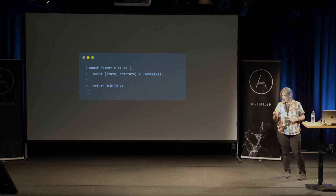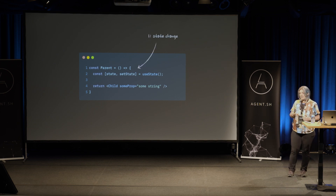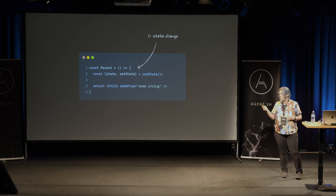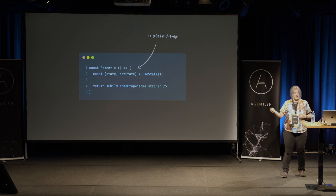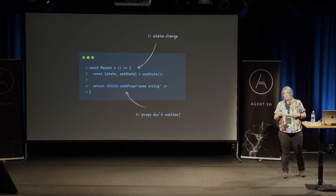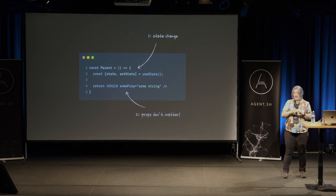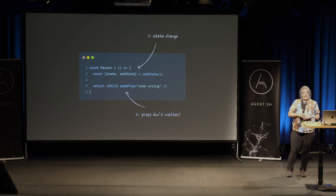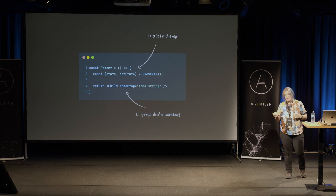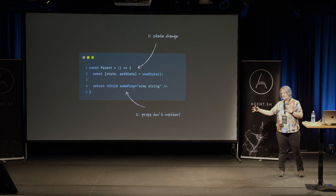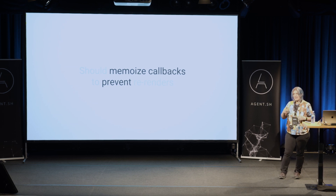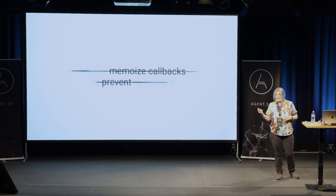What will happen if we add some props to this child component? Nothing actually changes, because React will not care about those props when a re-render is originated from state. It will re-render the parent, it will re-render all of the children. Exactly the same thing will happen if the state update was inside the child component with those props — React will not check whether props of this child component changed; it will just re-render the child component. As a result of the thinking that props change causes re-renders, there is another myth: we should memoize callbacks and objects and arrays as props to prevent re-renders of components, which is again not exactly true.